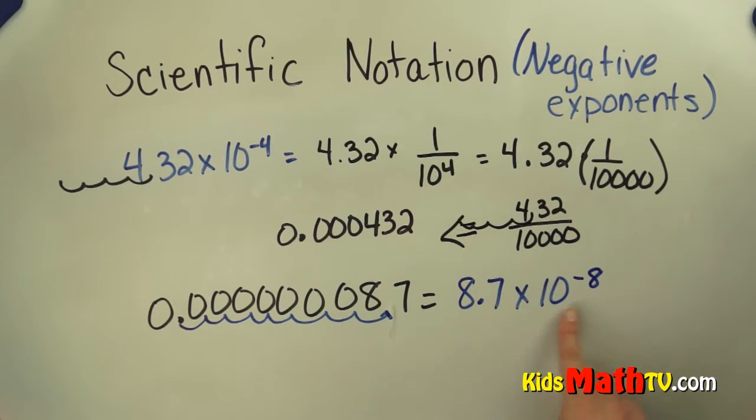So it's like we're dividing this number by a really large number, which makes it really small. That's the end of our lesson on scientific notation.